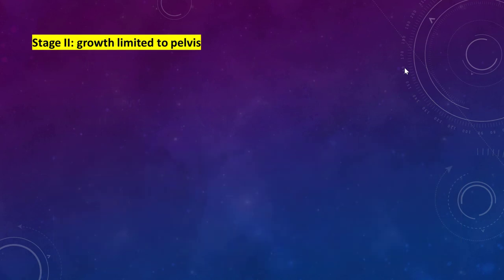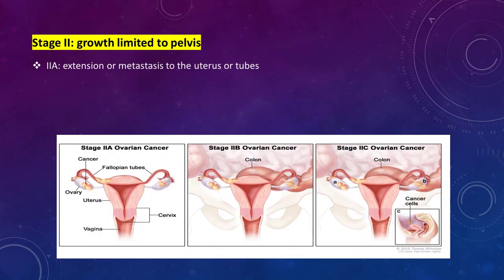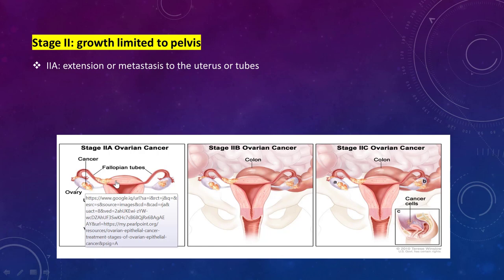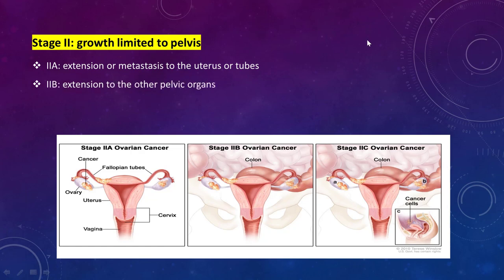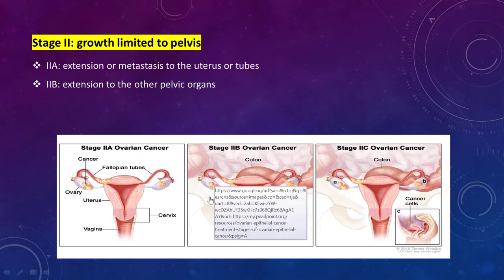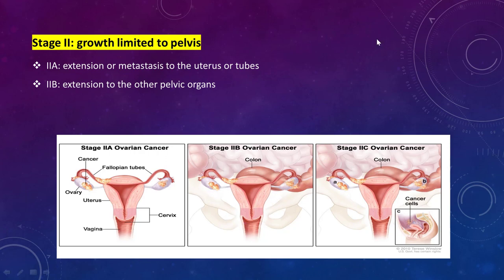Stage 2 is growth limited to the pelvis but outside the ovary. Stage 2a: extension or metastasis to the uterus or tubes. Stage 2b: extension to other pelvic organs. Stage 2c: either stage 2a or 2b, but with positive peritoneal washing or ascitic fluid for malignant cells. When we operate, we aspirate ascitic fluid if present, or perform peritoneal washing with normal saline; if cancer cells are found, it is called positive washing or positive ascites.